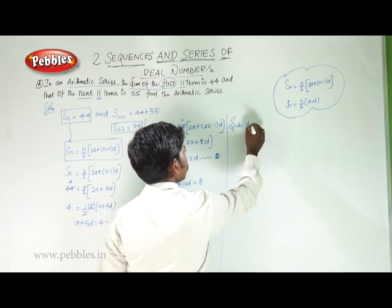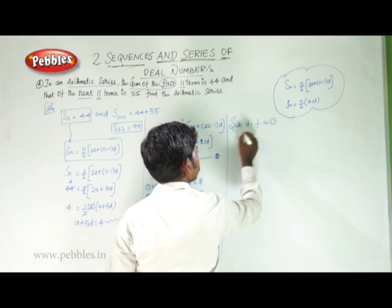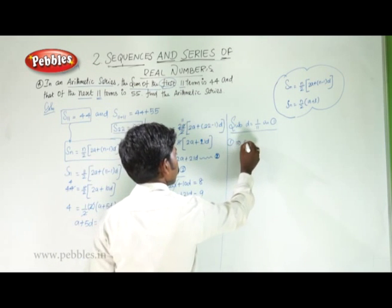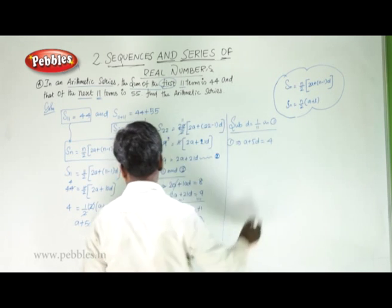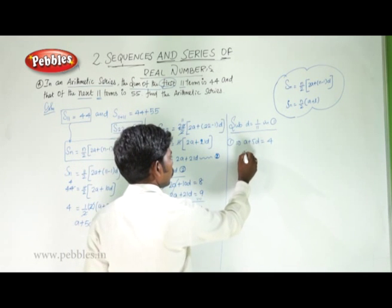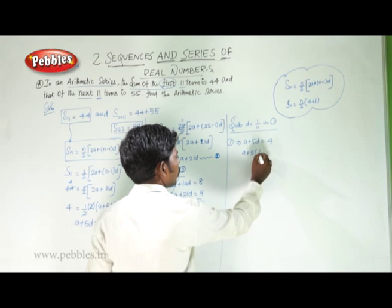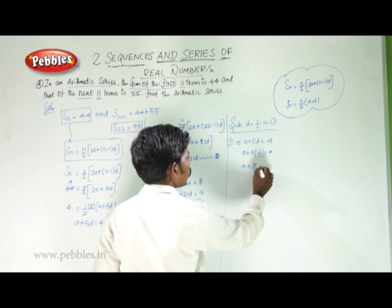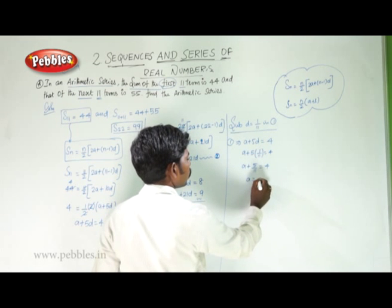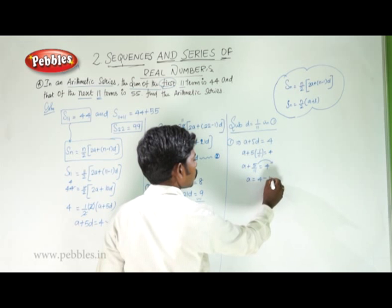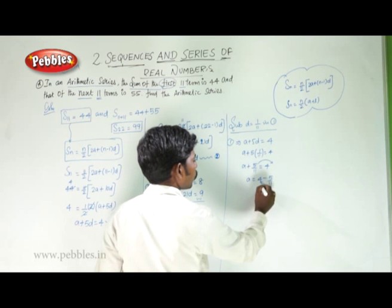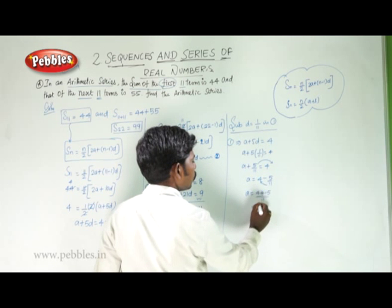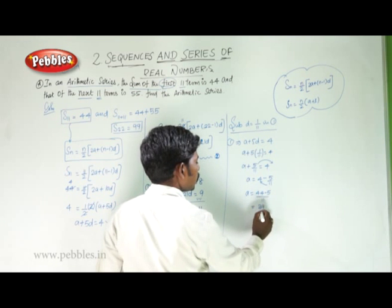Substituting d equal to 1 by 11 into the first equation: a plus 5d equals 4, so a plus 5 into 1 by 11 equals 4. That gives a plus 5 by 11 equals 4. Therefore, a equals 4 minus 5 by 11, which by cross multiplication is 44 minus 5 by 11, so a equals 39 by 11.